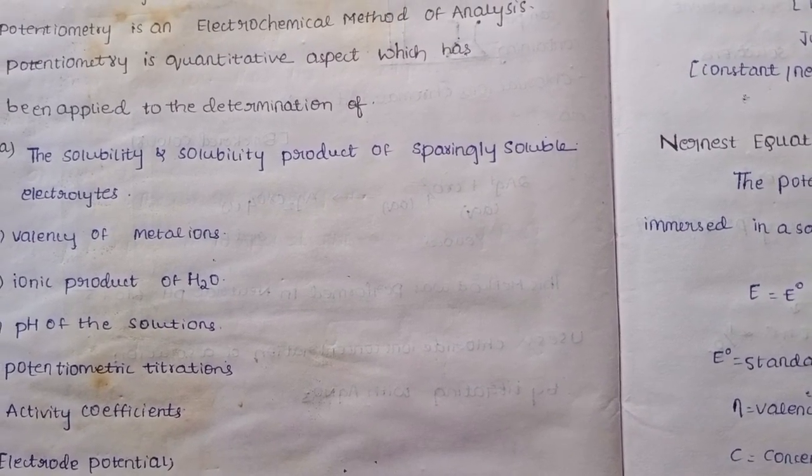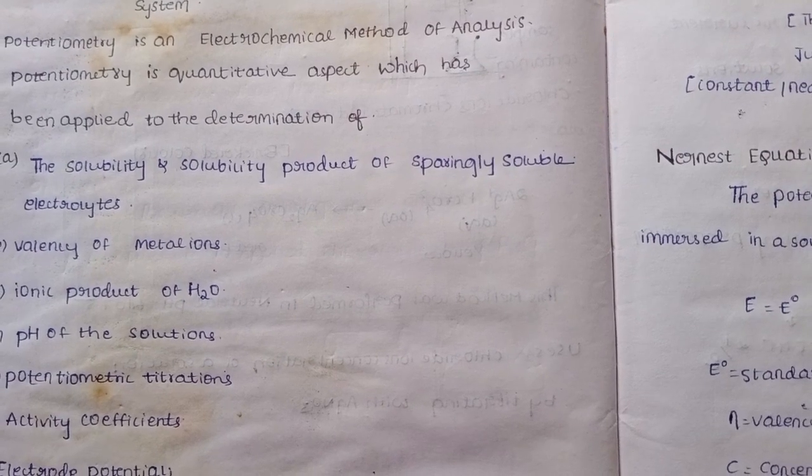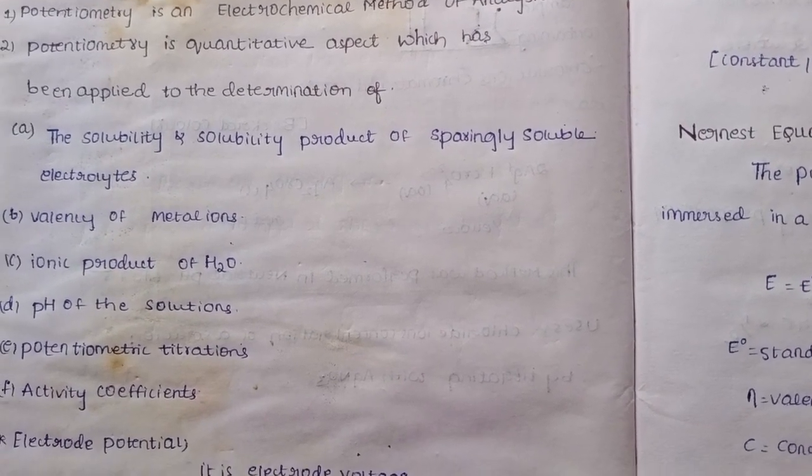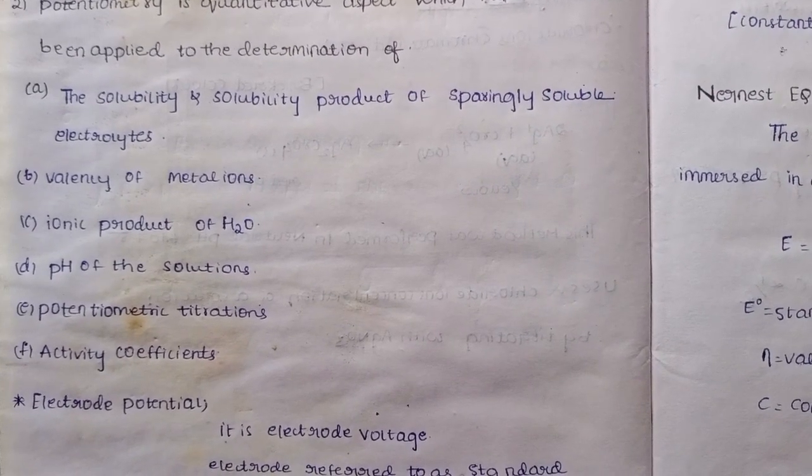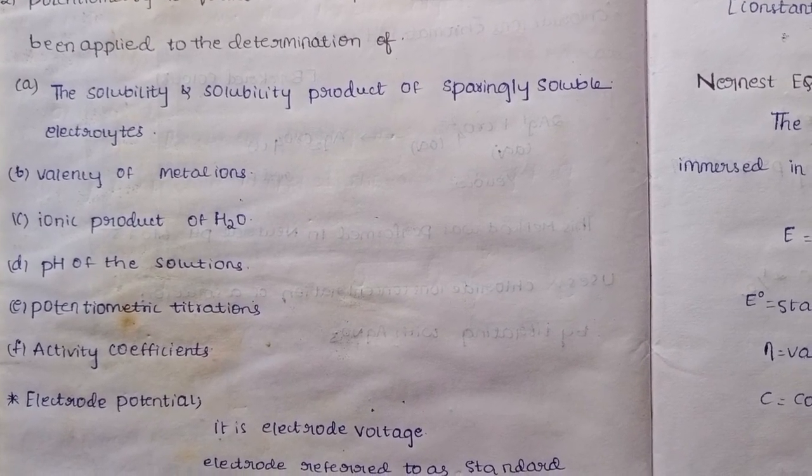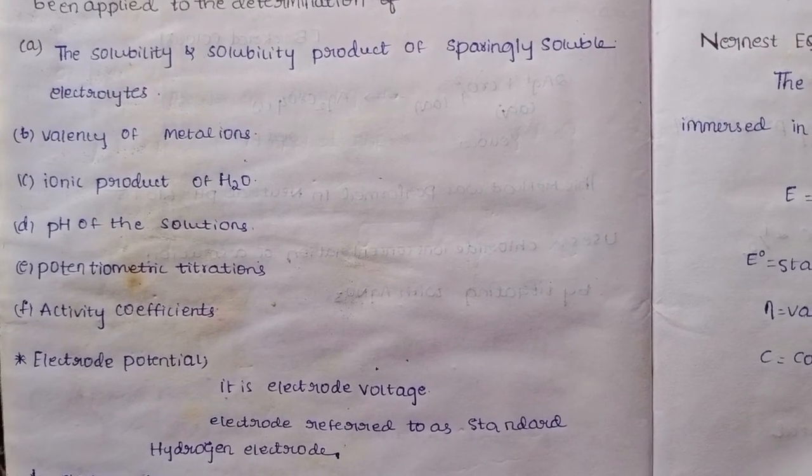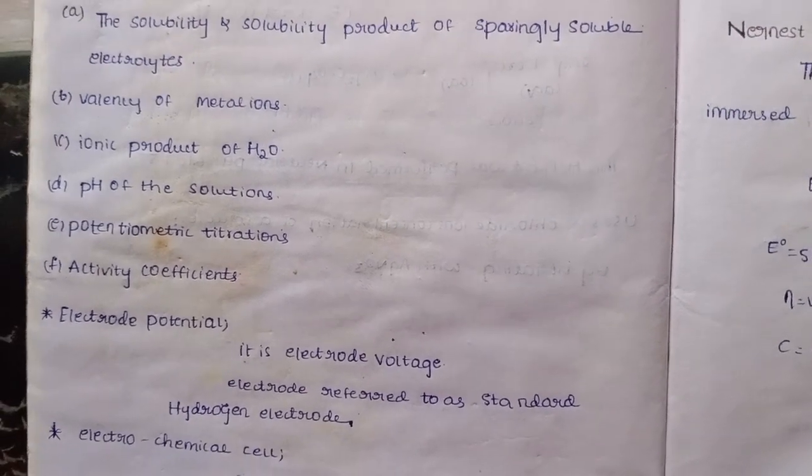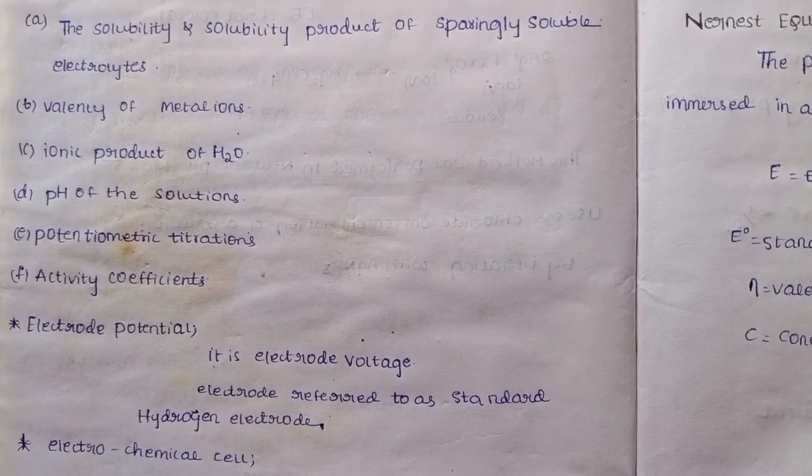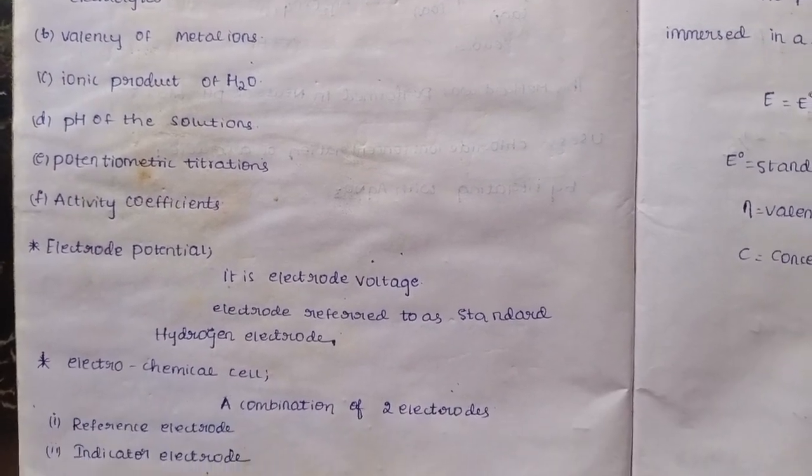And valency of metal ions. And ionic product of water, pH of the solution, potentiometric titrations, activity coefficients. So we use the potentiometry to measure and determine these parameters.